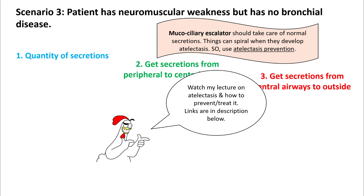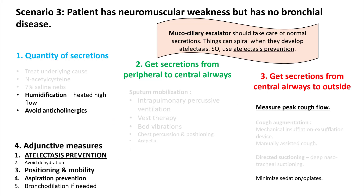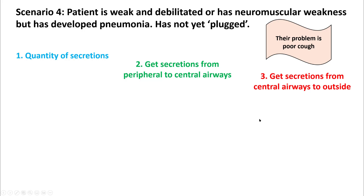If your patient has neuromuscular weakness but no bronchial disease, their mucociliary escalator should take care of normal secretions. Things can certainly spiral down when they develop atelectasis, so use atelectasis prevention techniques — watch my lecture on atelectasis, links in description below. These patients usually need supportive care. Ensure air is adequately humidified, avoid anticholinergics, measure peak cough flow to assess risk, minimize sedation and opiates, and perform atelectasis prevention techniques.